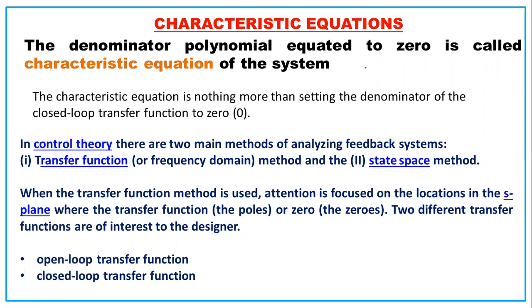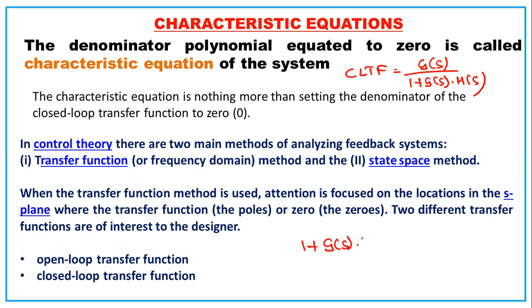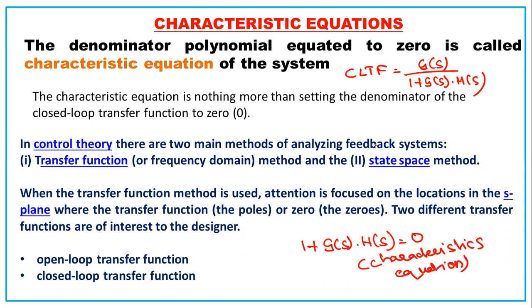Today we will see what we mean by characteristic equation. The denominator polynomial equated to zero is the characteristic equation. We know that the closed-loop transfer function is equal to G(s) / (1 + G(s)H(s)), so 1 + G(s)H(s) = 0 is the characteristic equation. The denominator of the transfer function equated to zero is called the characteristic equation of the system.